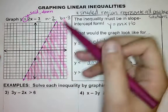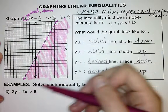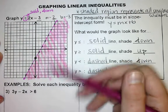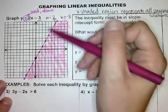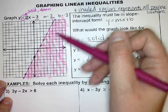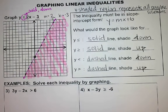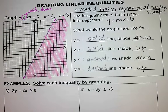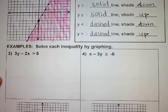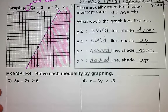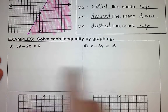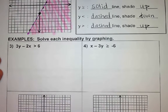We can shade down, and this shaded region represents all of the possible solutions. Anything in this area is a solution to the inequality. Also, anything on this line is also a solution because it's a solid line. If it was a dashed line, there would not be solutions. Before you shade, you want to make sure it is in slope-intercept form.